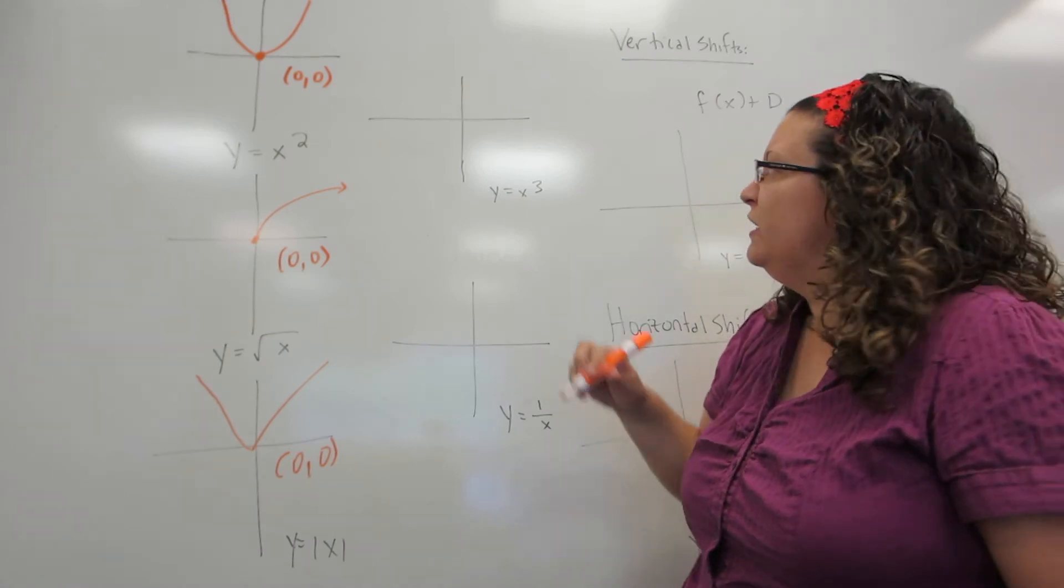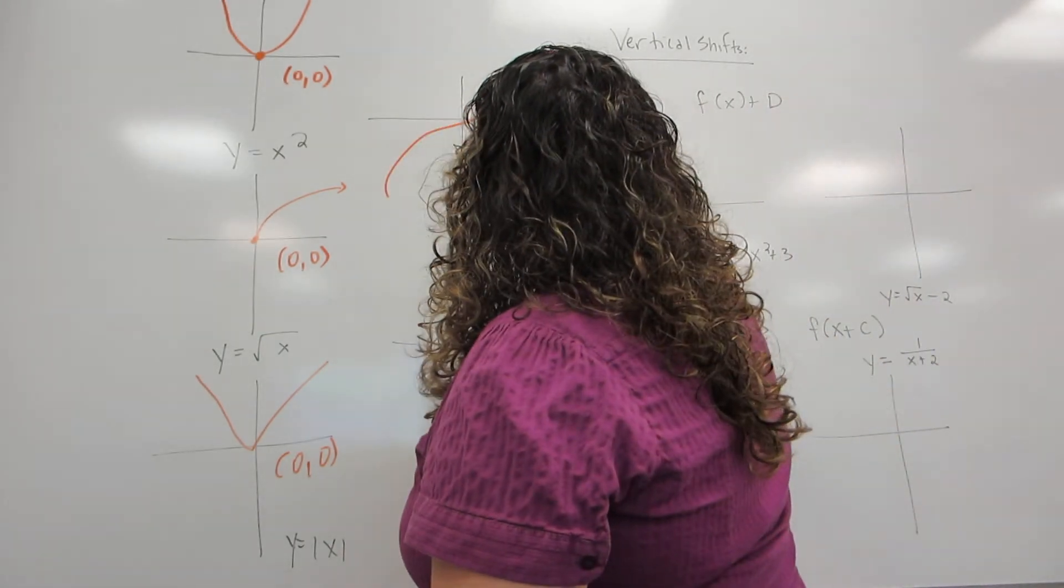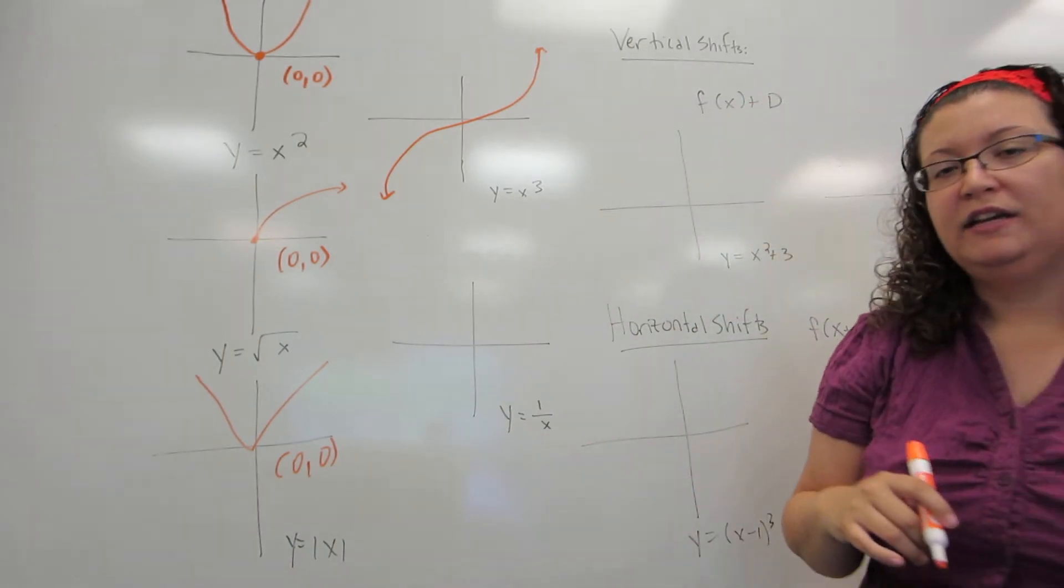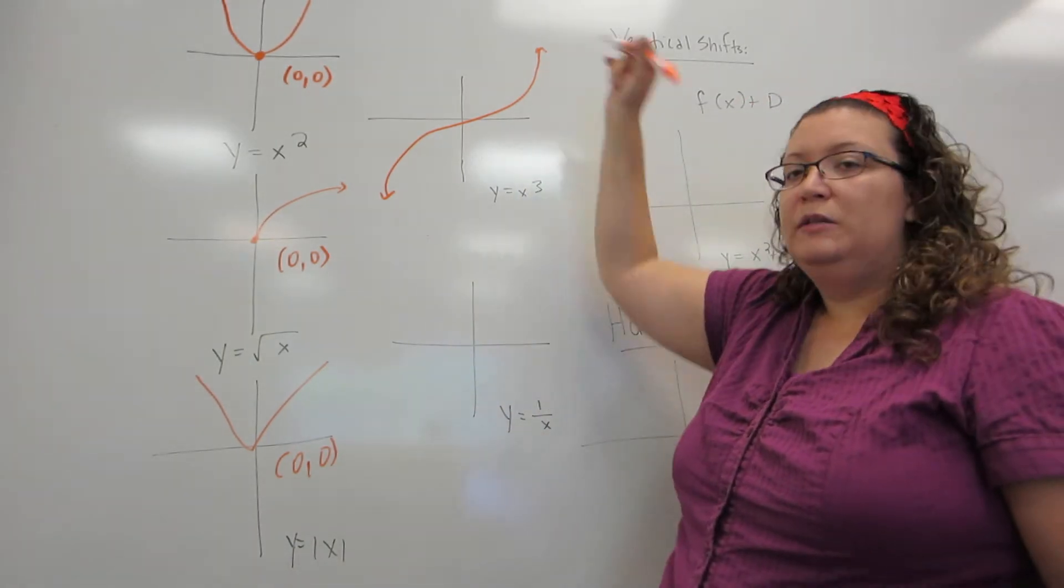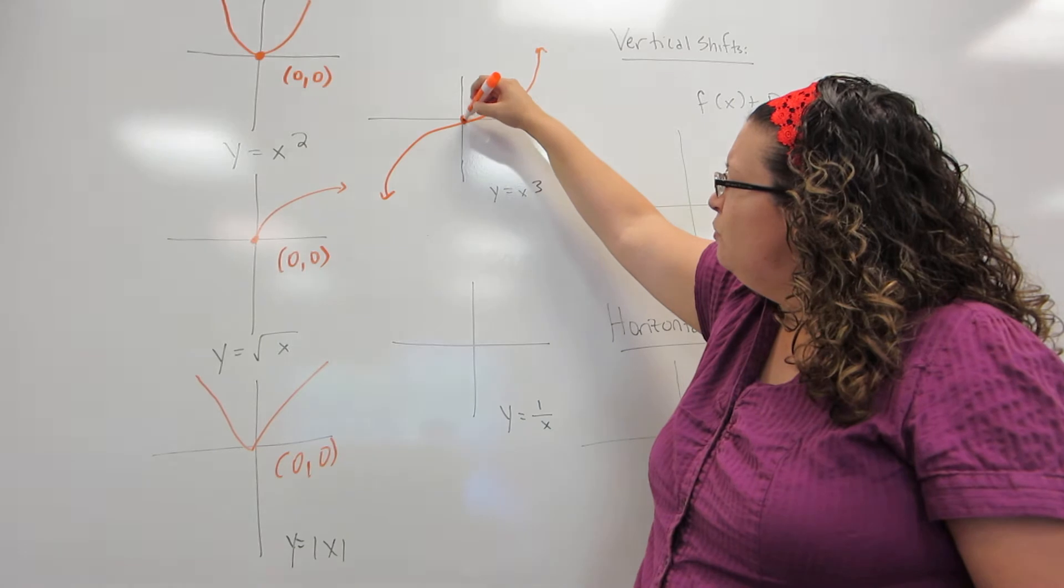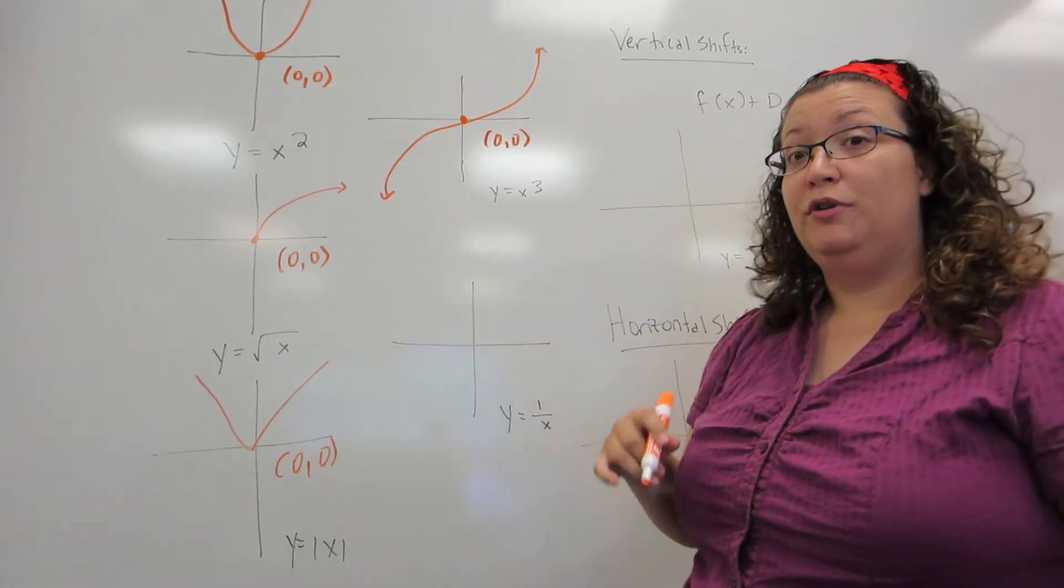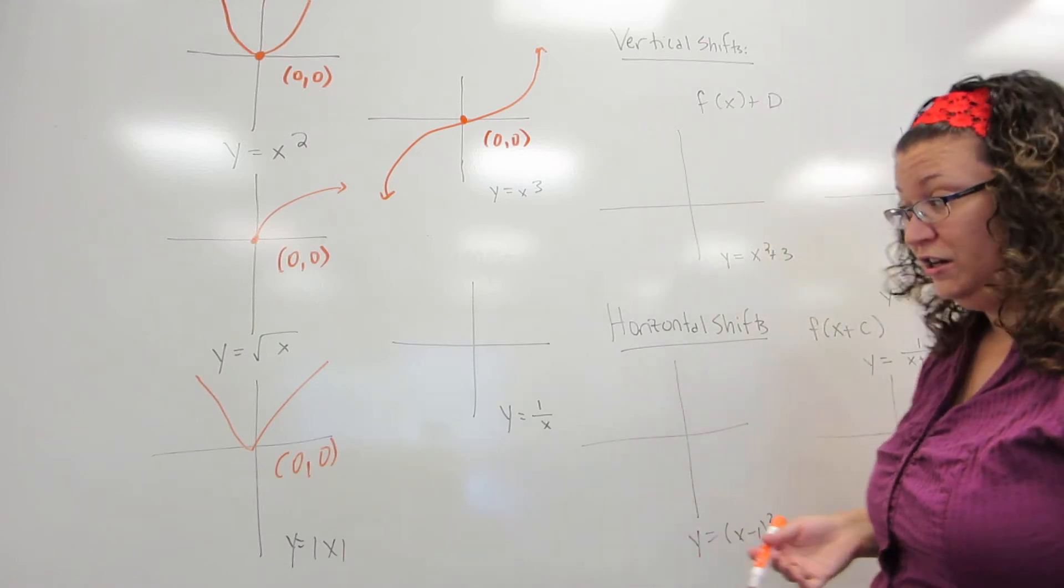Y equals x cubed is quite an interesting graph. I like to call it an Ikea chair, because it looks like some of those crazy chairs they sell at Ikea. It has this nice pretty swoop. The most important point is, again, at the origin originally. It's the place you put your behind when you're sitting in the Ikea chair.